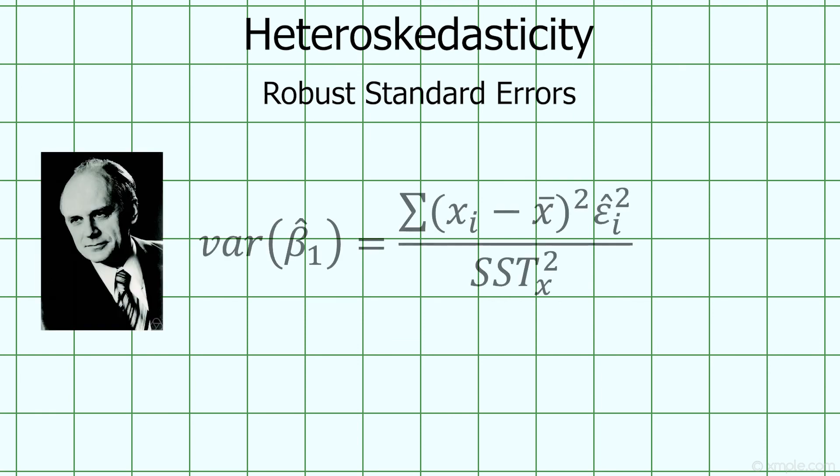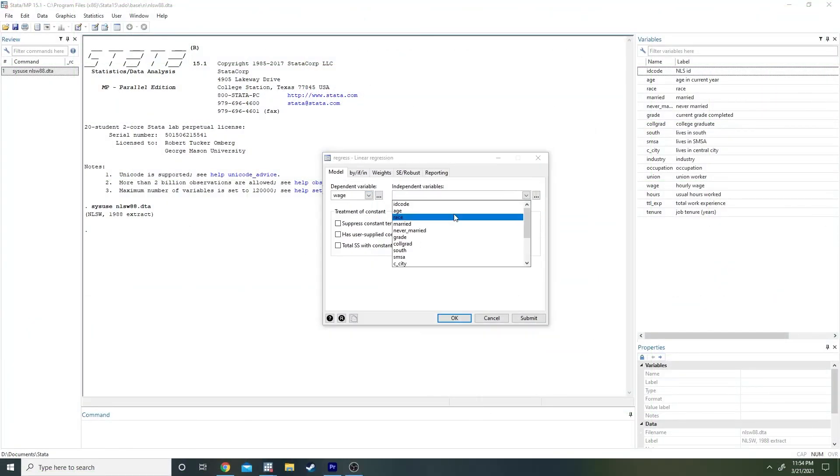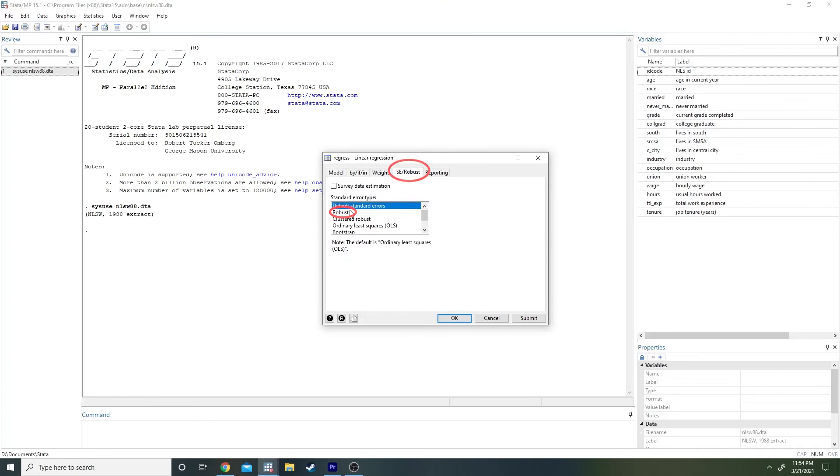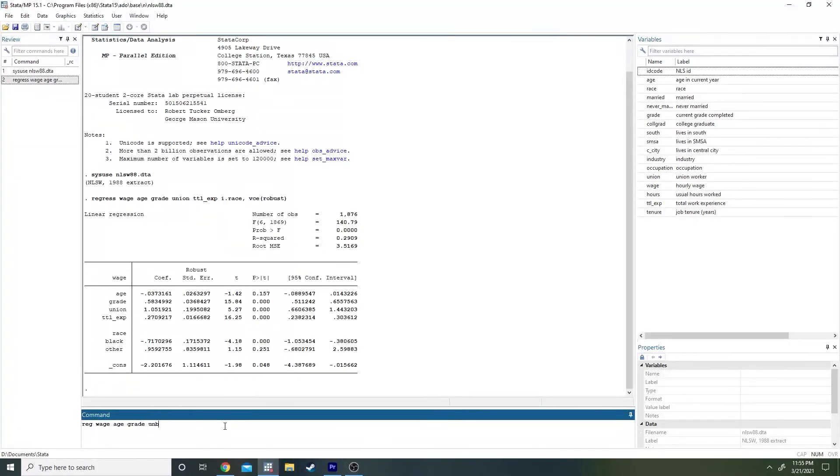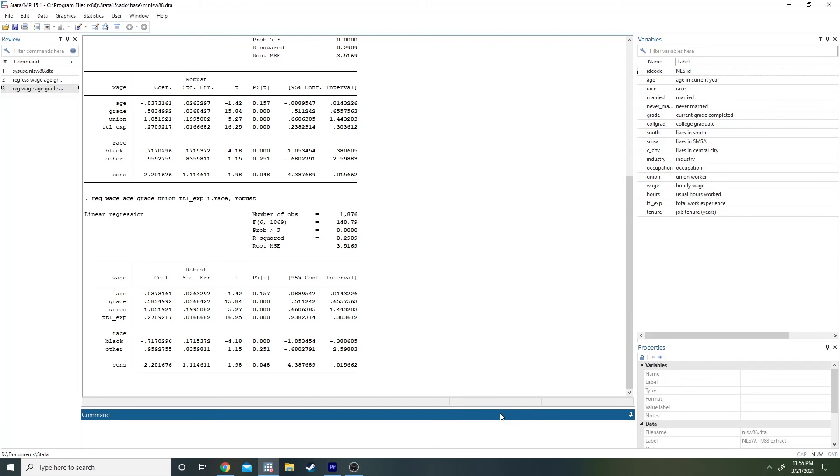In fact, economists worry much less about heteroscedasticity than some textbooks would suggest, due to robust standard errors. See, back in 1967, statistician Fred Eicker developed this expression that yields a valid estimator for the variance of beta-1 hat under any form of heteroscedasticity, including homoscedasticity for that matter. We can use this formula for variance to calculate heteroscedasticity robust standard errors, which provide a measure of variability in our slope coefficient that is reliable even if we do have heteroscedasticity. So, if we want Stata to report the robust standard errors instead of the regular standard errors, we can select the robust option in the SE/robust tab in the linear regression window, or add comma robust to a regression command in Stata. Since it's so easy to use robust standard errors, economists running regressions use robust standard errors by default, and so should you.